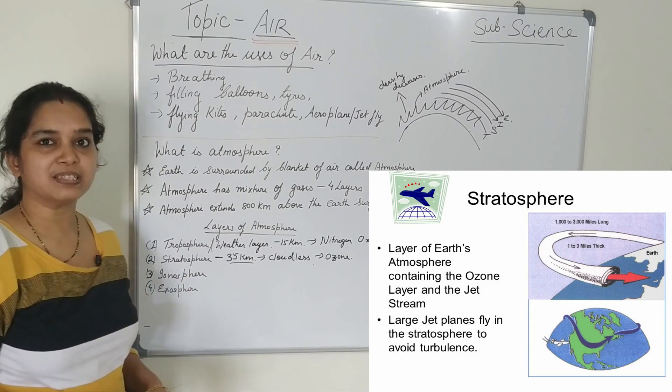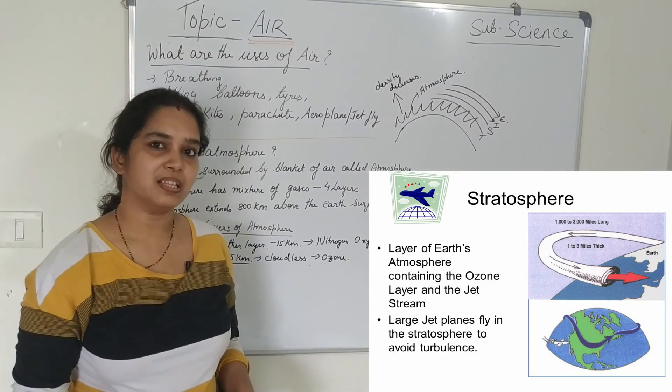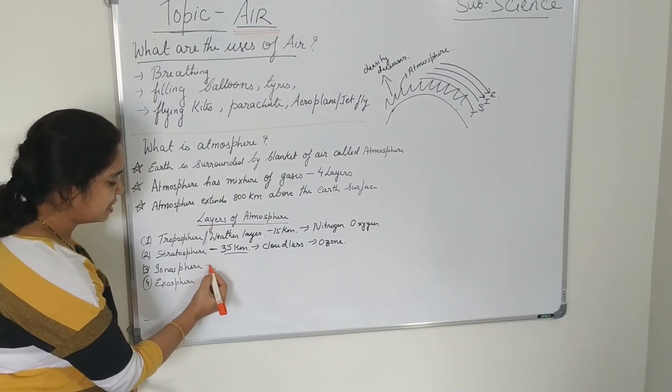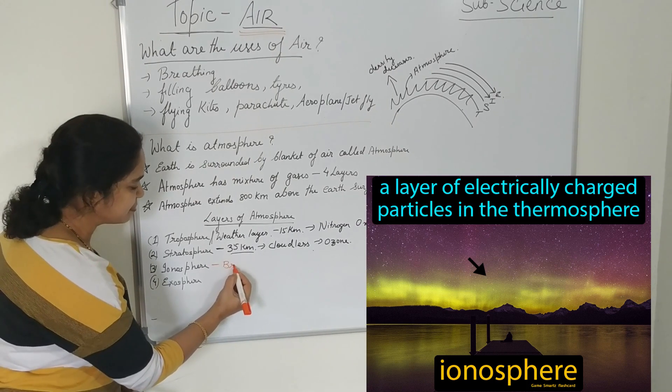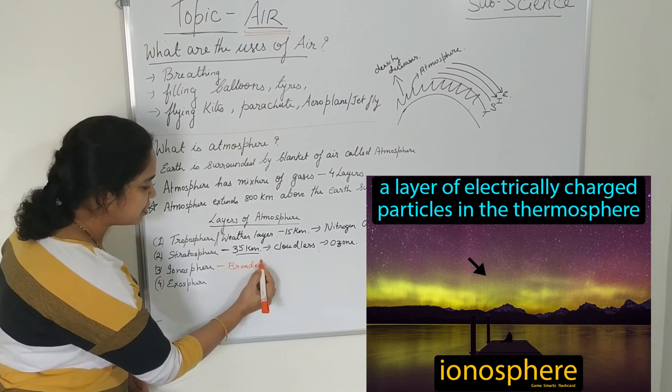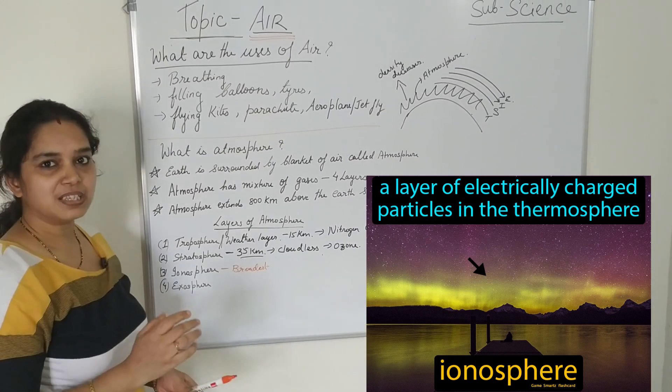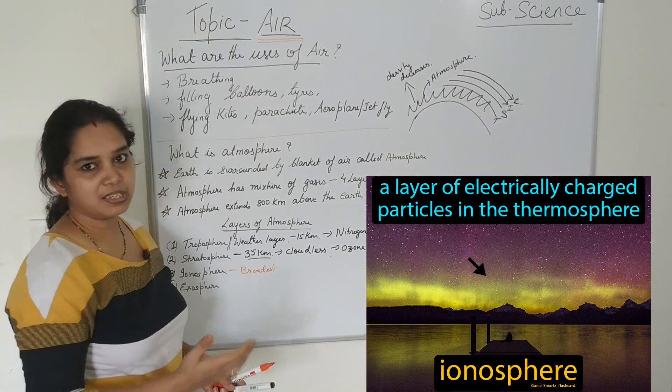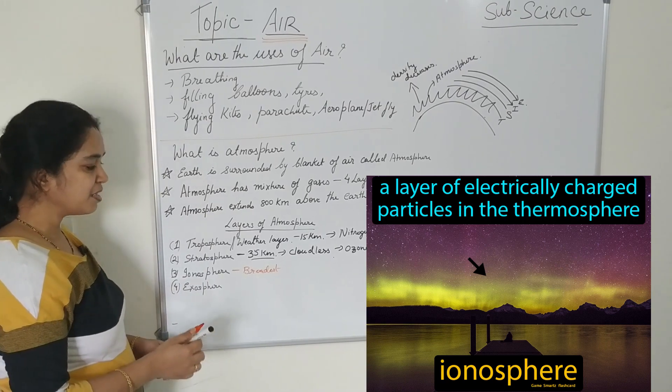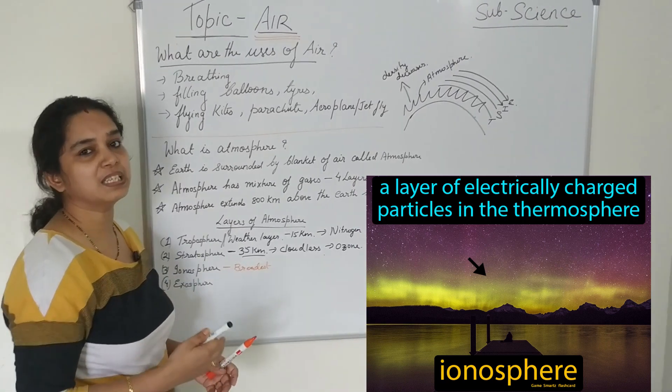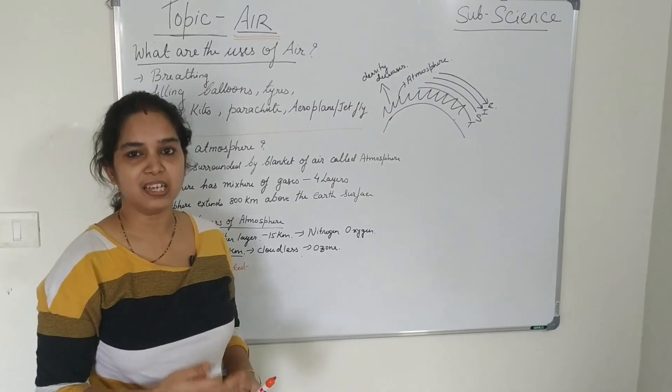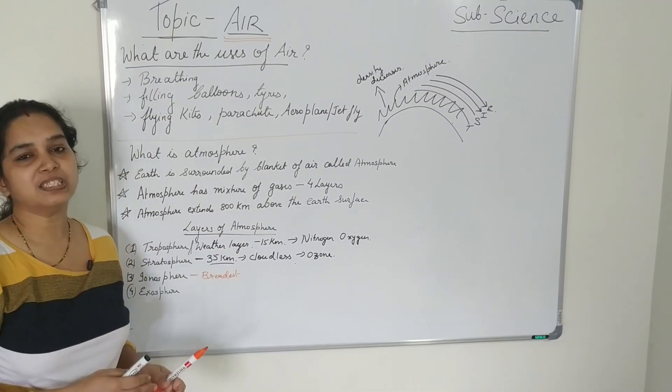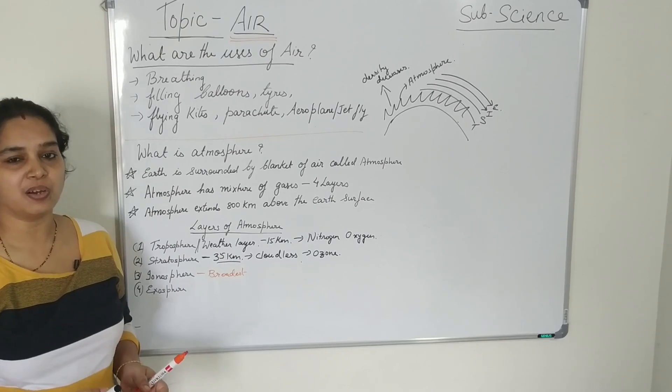The third one is the ionosphere, it is the broadest layer. It is the broadest layer, means it extends up to more than 200 kilometers above the earth's surface. It consists of mostly the charged particles, the ions are mostly charged because of the radiation of the sun.